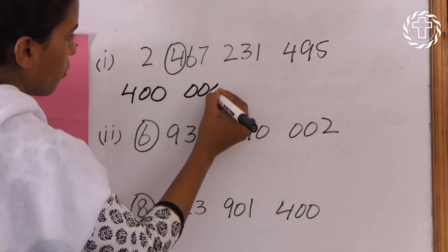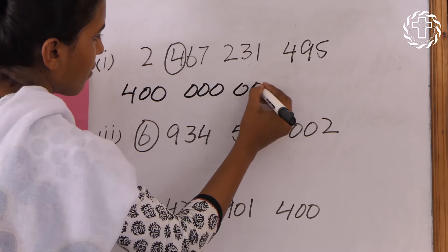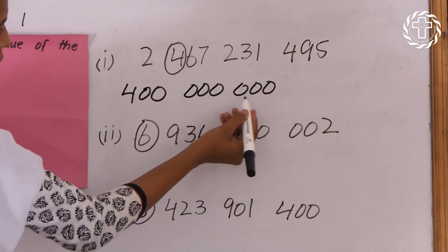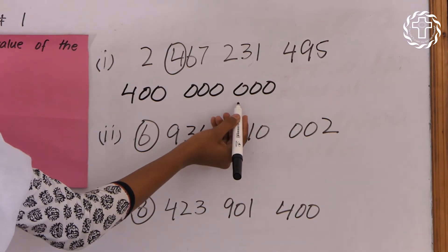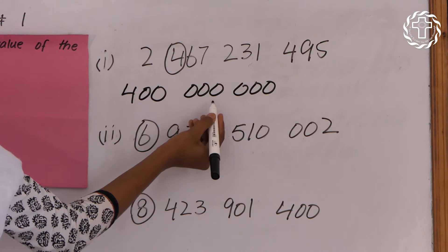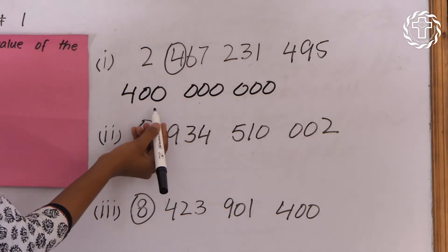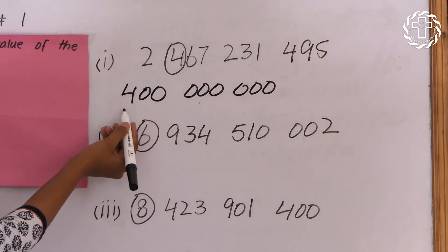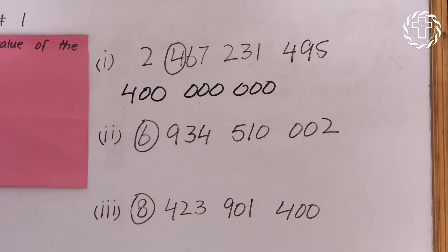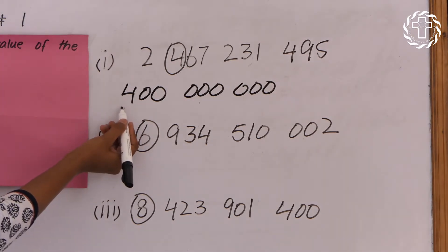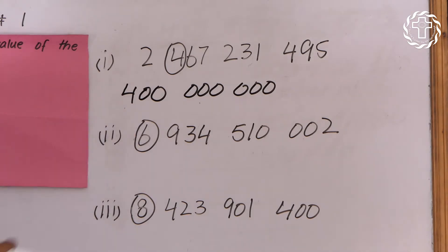Unit, tens, hundreds, thousands, ten thousands, hundred thousands, million, ten million, hundred million. So the place value of this number is four hundred million.